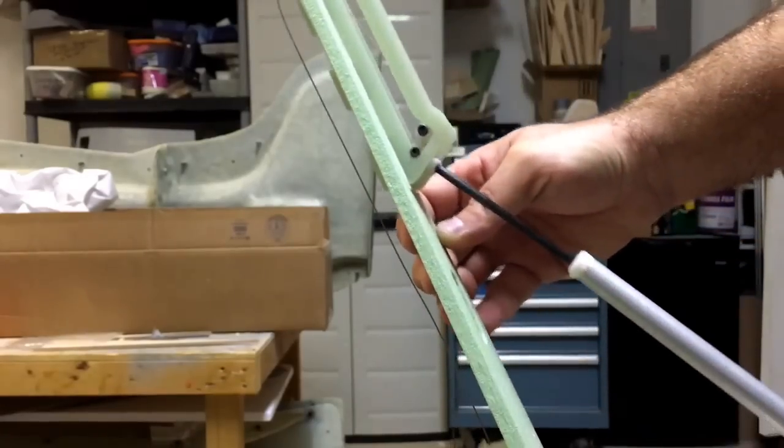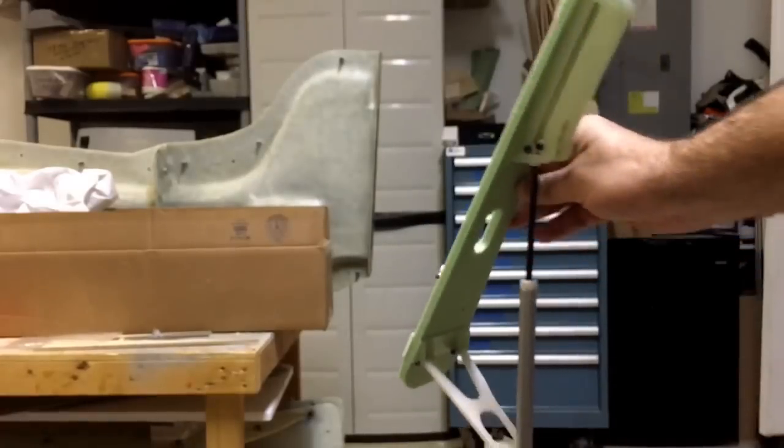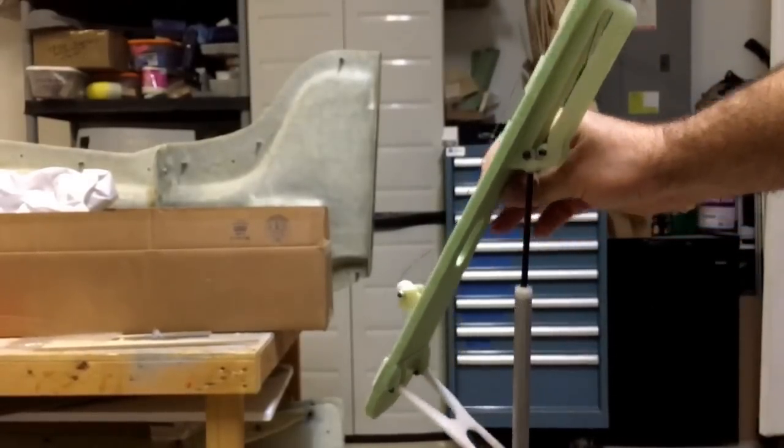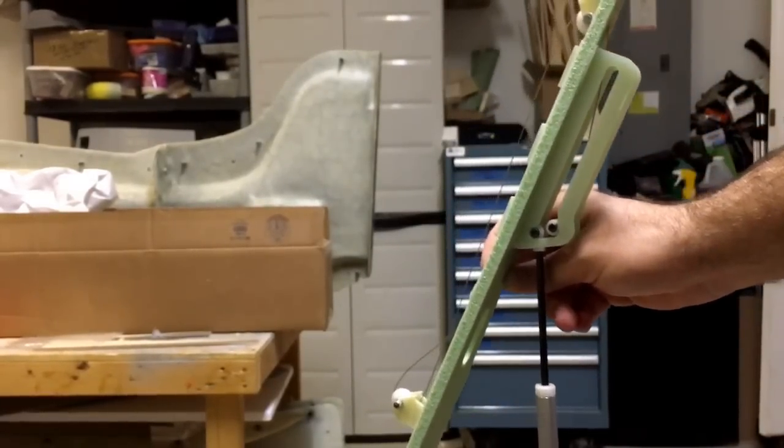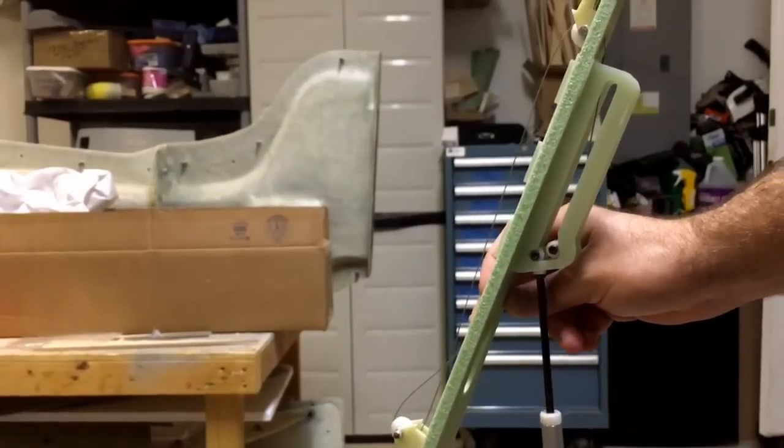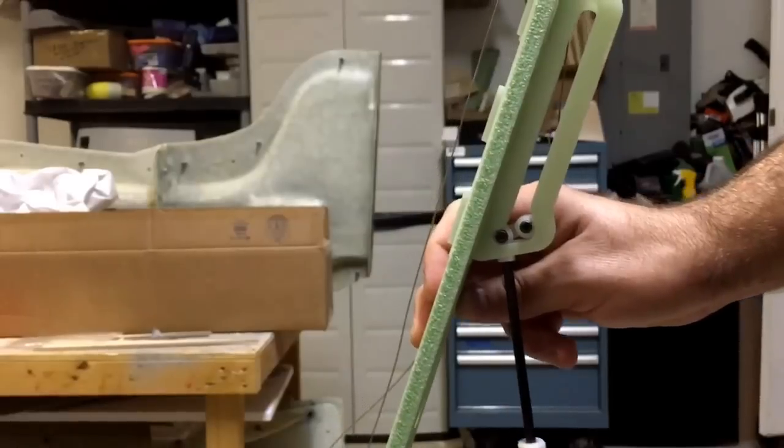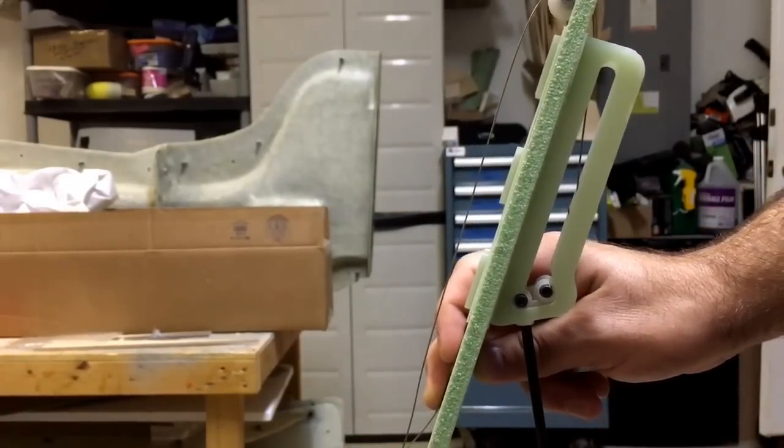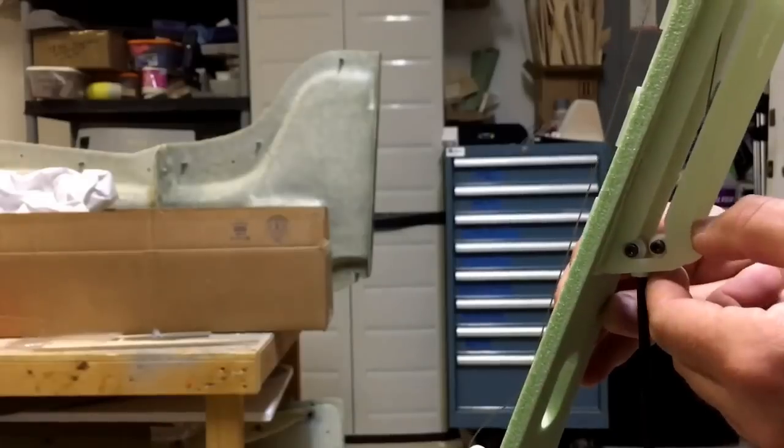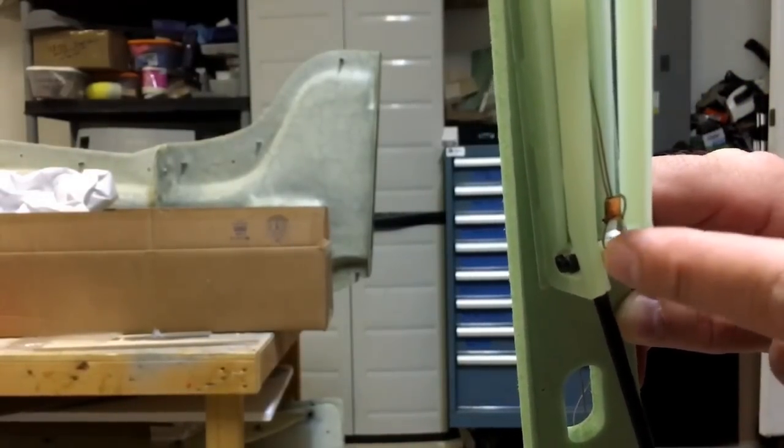This is the tailwheel retract mock-up. The Focke-Wulf 190 is kind of interesting in how they did their tail wheel design. It's basically fully actuated and cable retracted and spring extended. There's actually a little lever in here that a spring gets attached to.